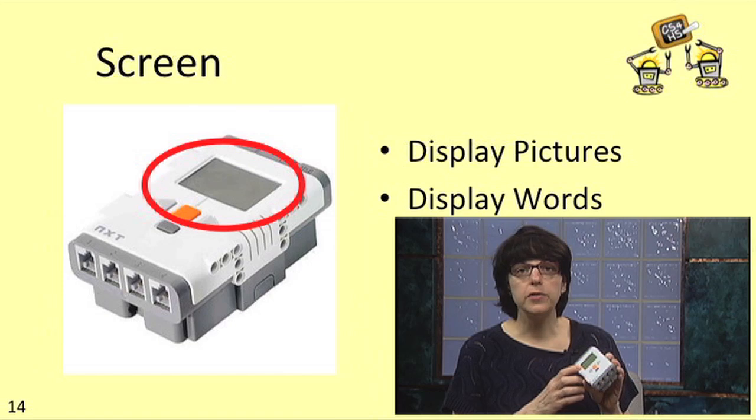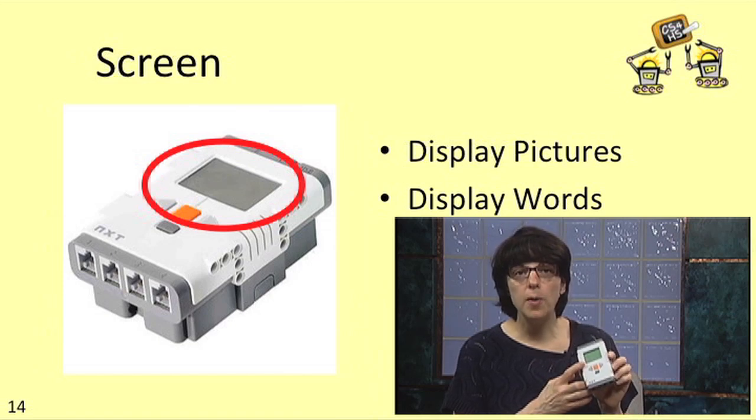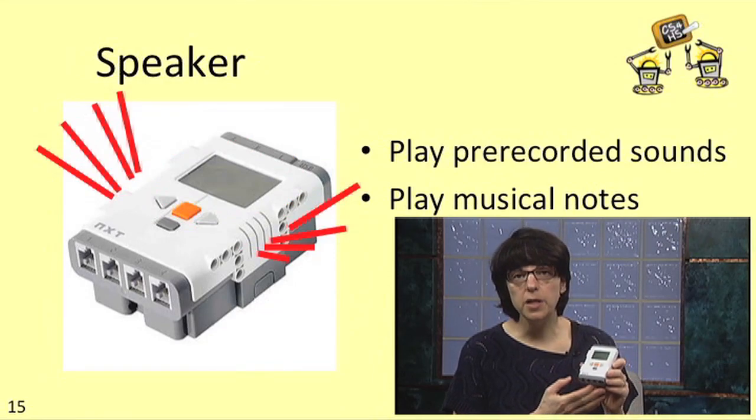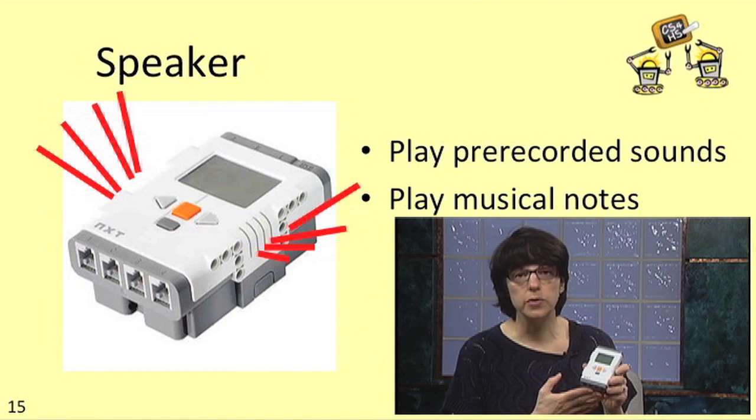On the NXT Brick there's a small screen and the robot can display pictures and words on this screen. The robot also has a built-in speaker and the robot can play pre-recorded sounds and musical notes through its speaker.